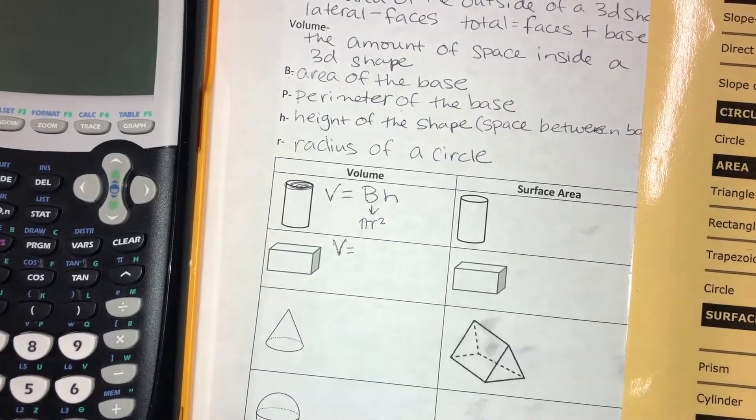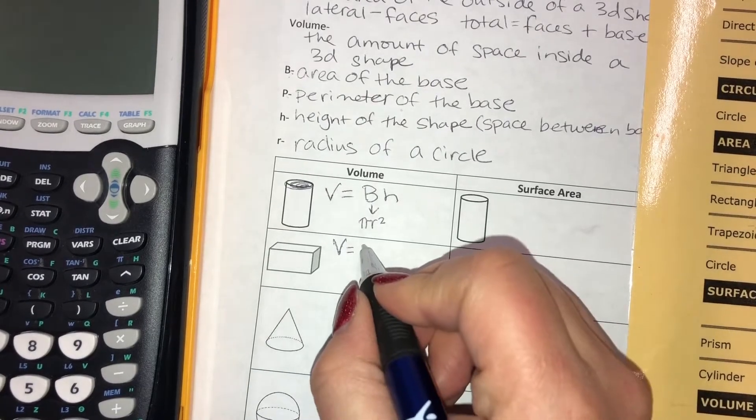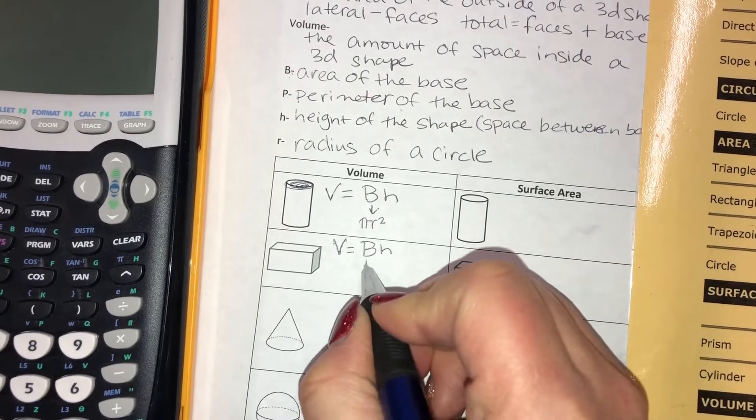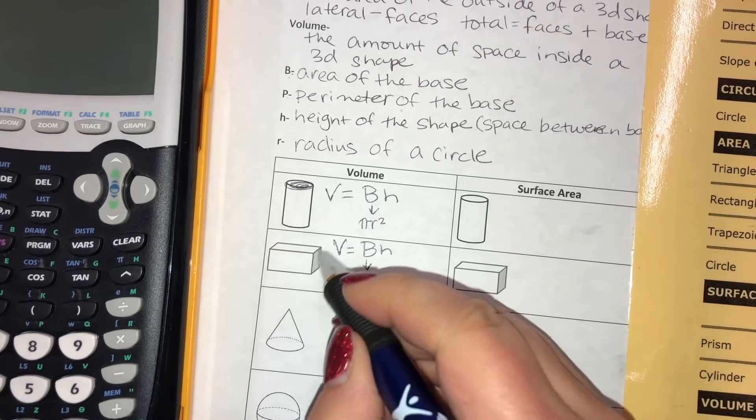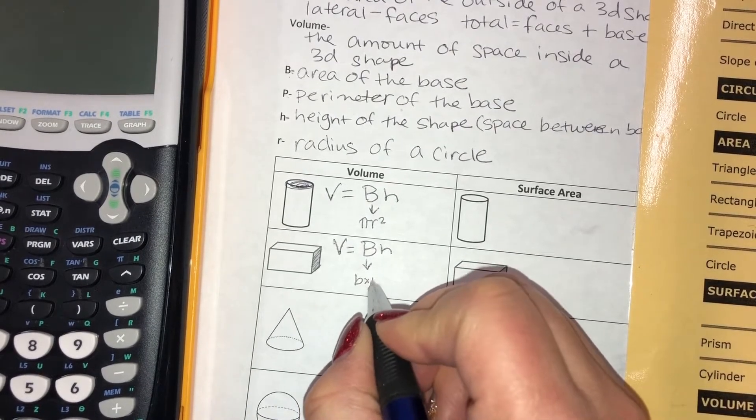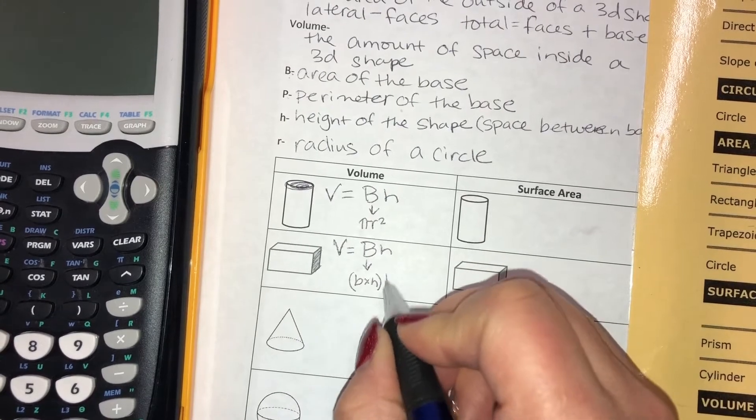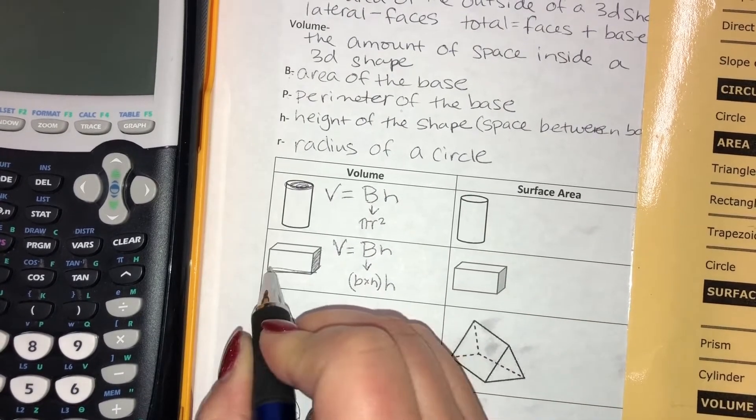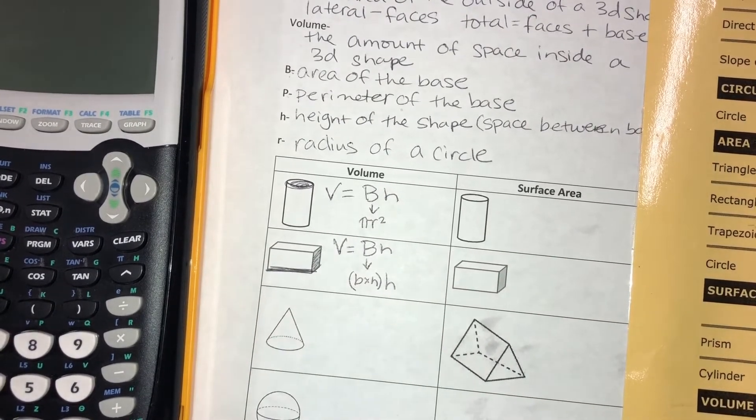This one would be a prism. So V equals BH. But the base isn't a circle anymore. The base is a parallelogram. So you would do base times height and then times the height of the shape. This would be the height of the shape because it's the distance between the two bases.